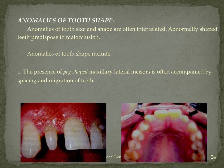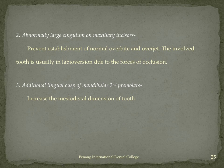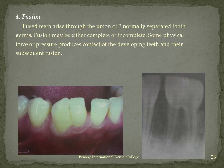Anomalies of tooth shape most commonly include peg-shaped maxillary lateral incisors, which can lead to spacing, migration of adjacent teeth, tilting, and altered axial inclination. The second common occurrence is an abnormally large cingulum on maxillary incisors, which prevents establishment of normal overbite and overjet; the involved tooth is usually in labioversion due to the forces of occlusion. Third is an additional lingual cusp of mandibular second premolars, increasing the mesiodistal dimension of the tooth.